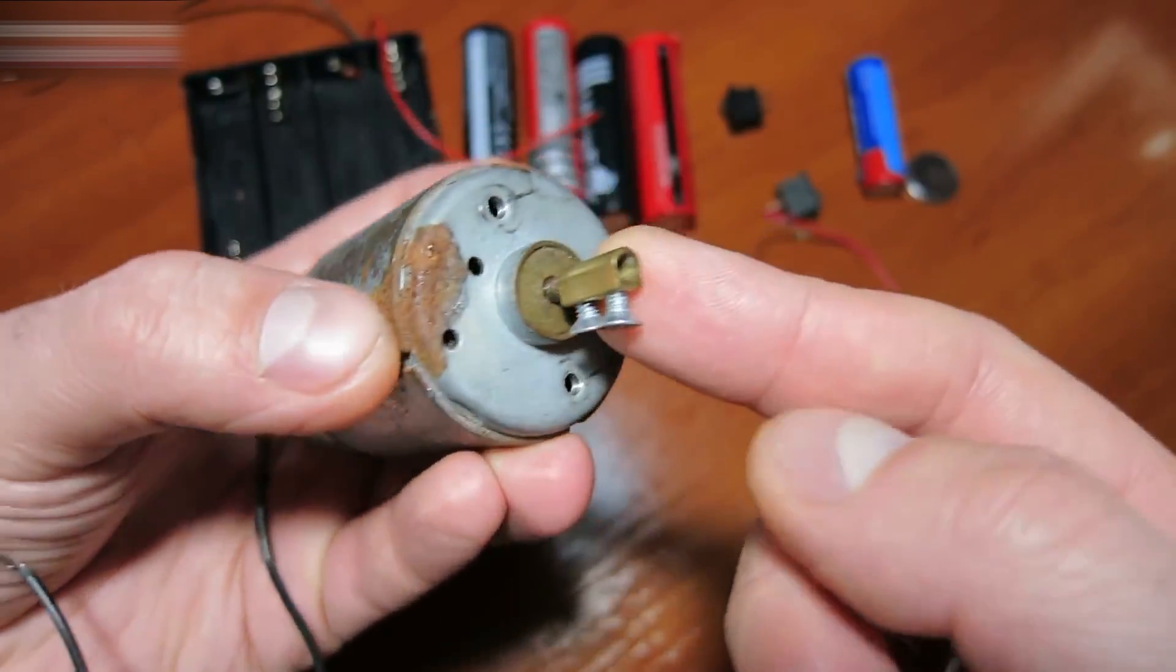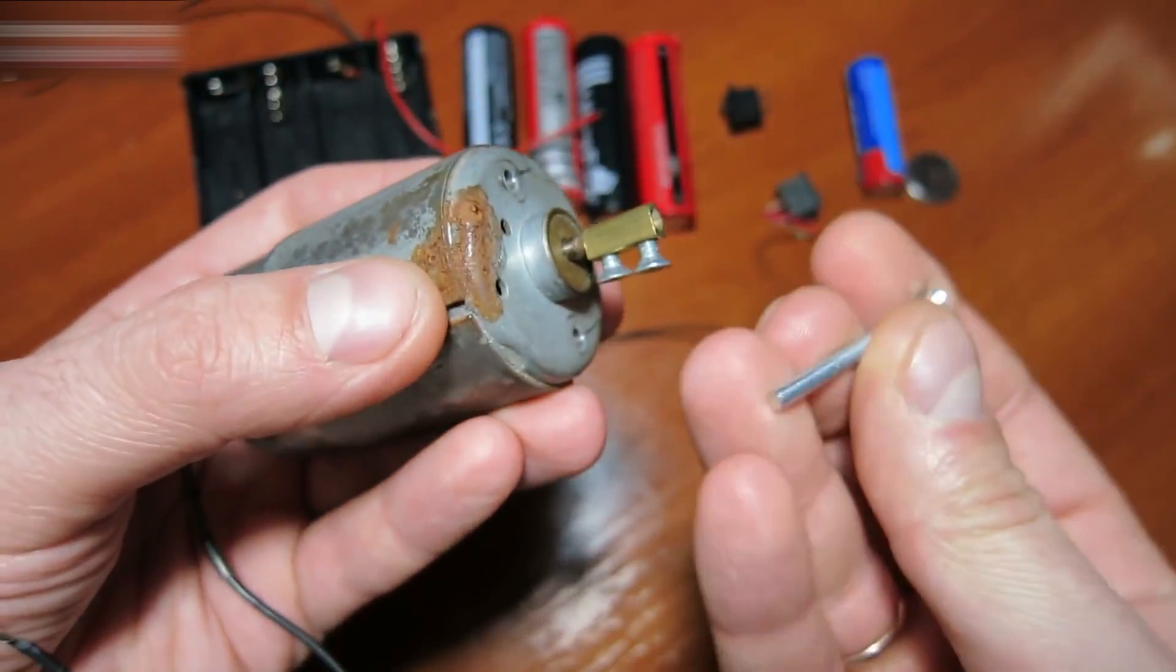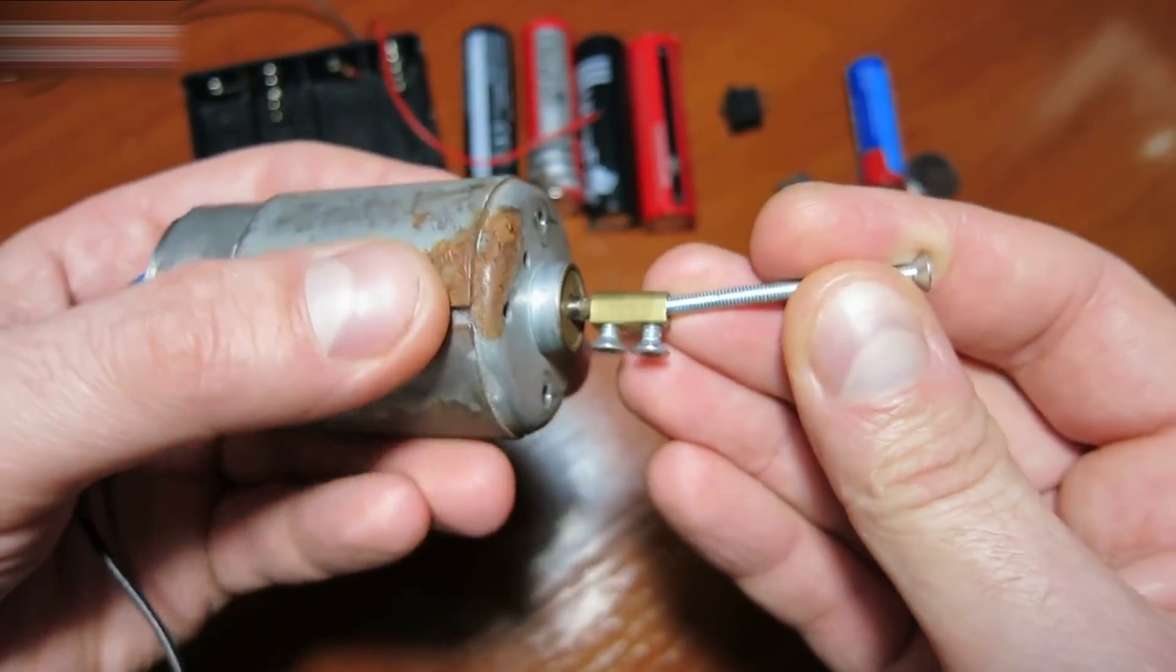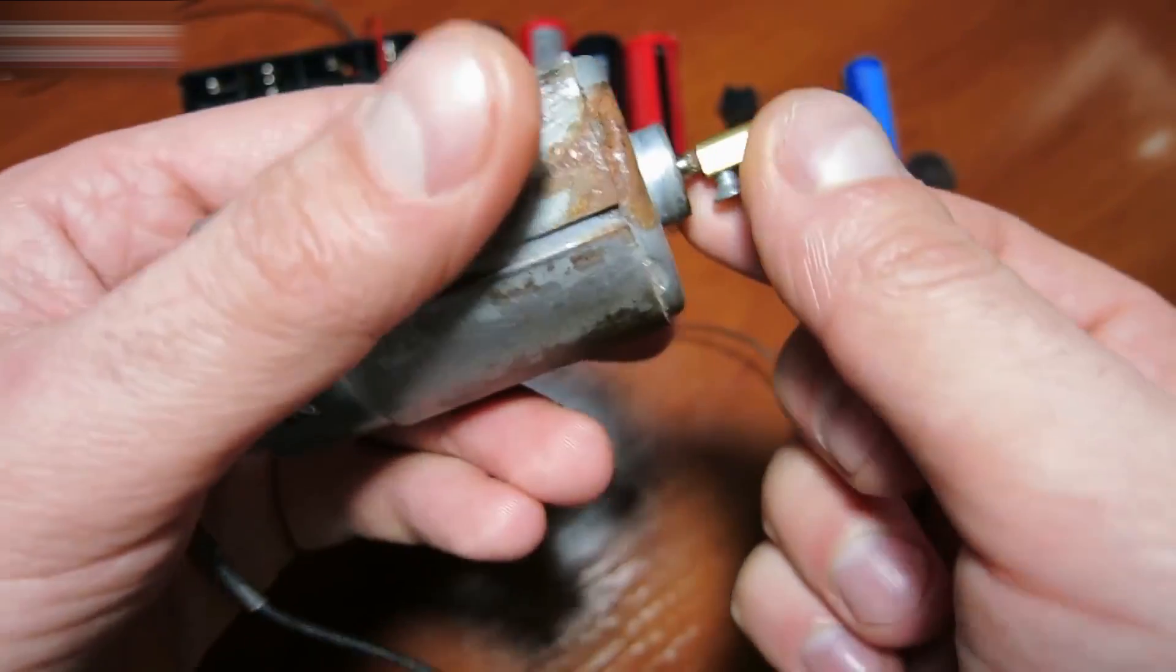Attach a plug from the terminal block to the motor shaft. The shaft's inner diameter is 3mm, which is very convenient. Use a 3mm screw to fasten it like this. The links for the terminal block and all other parts are in the video description section.